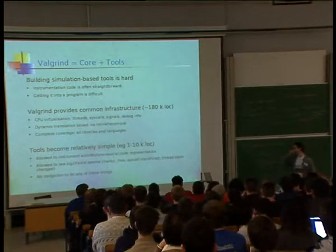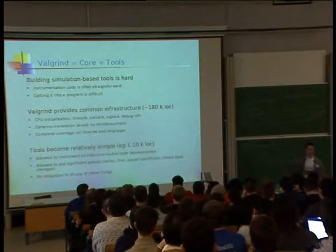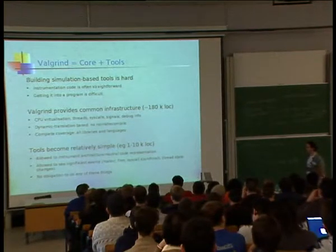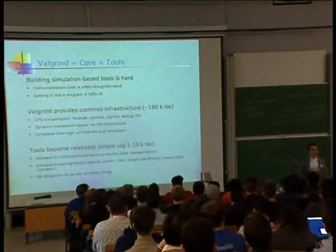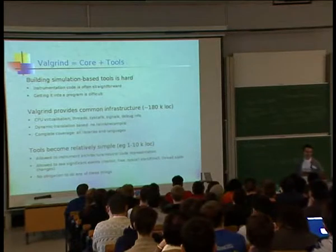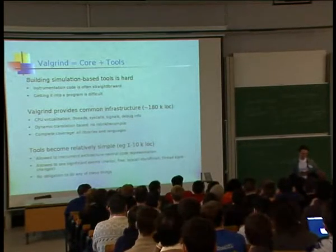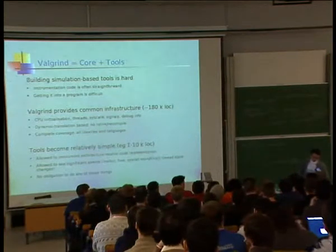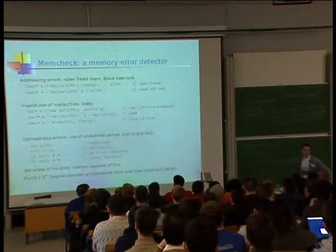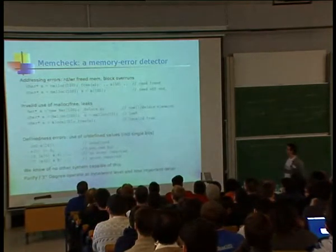The tools, you get this nice architecture-independent code representation which tools can add instrumentation code to, so you write a tool once and then it works on x86 or PowerPC or whatever with almost no extra effort. The tool can see the events that are significant to it, like thread state changes for threading tools or malloc and free changes for memory tracking tools. And there's no obligation to do any of these things, so you can write a really simple tool which will count the number of, say, basic blocks executed in about 100 lines of code and just link it in and you have a tool which will run anything and do that.